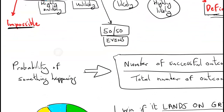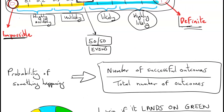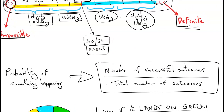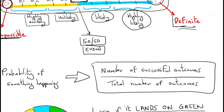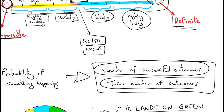So what is probability? In essence, probability is the number of successful outcomes divided by the total number of outcomes possible. It's in fraction form in that sense.